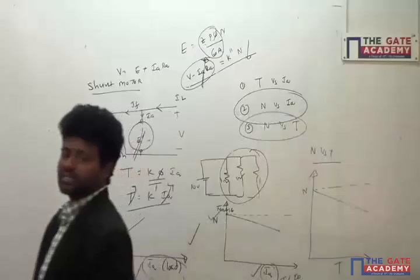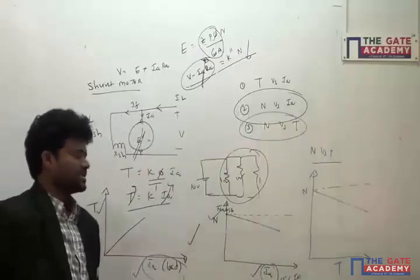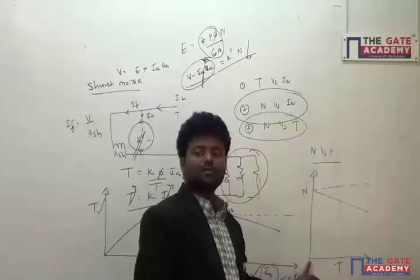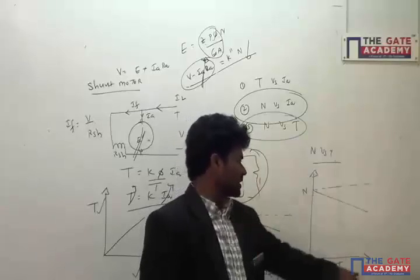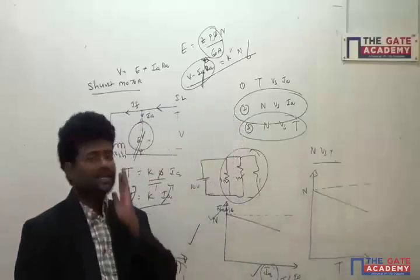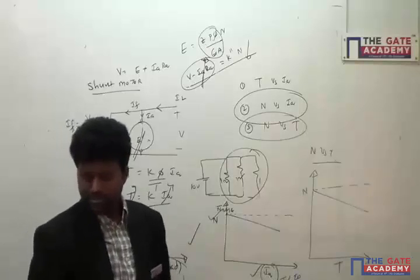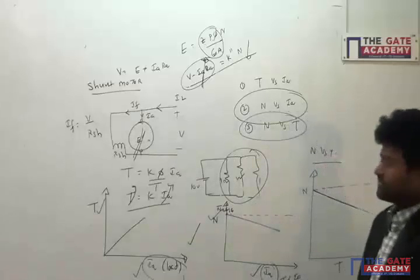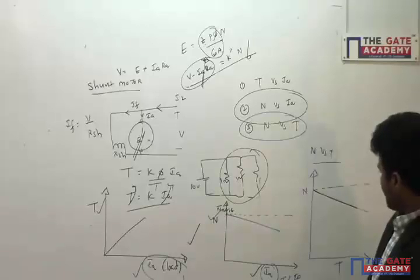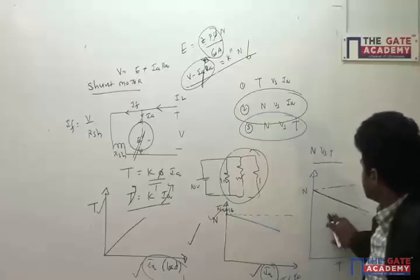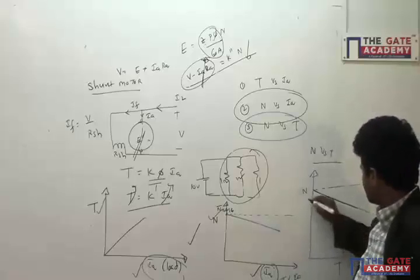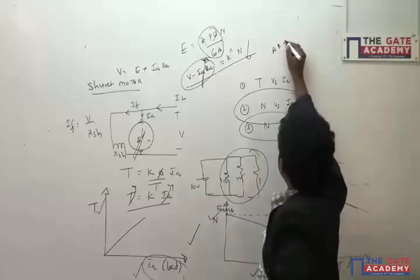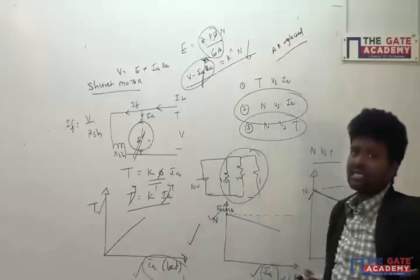At no load, torque is zero and speed is high. As load increases, torque increases and speed decreases. This is called a drooping characteristic — both the speed-current and speed-torque curves are drooping. This is the ideal scenario where armature reaction is neglected.